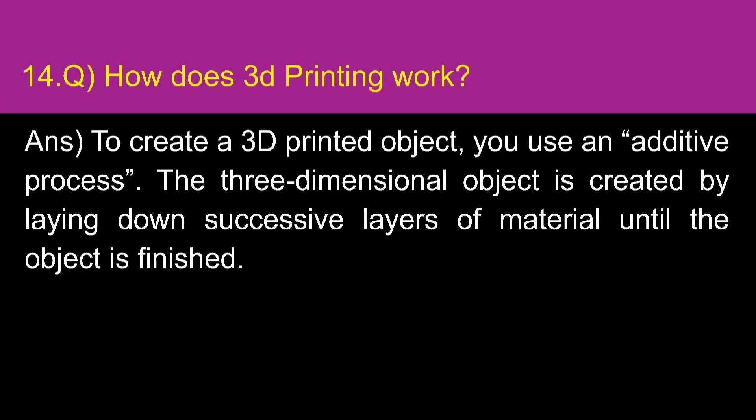How does 3D printing work? To create a 3D printed object, you use an additive process. The three-dimensional object is created by laying down successive layers of material until the object is finished.